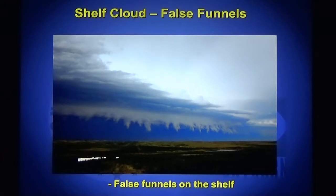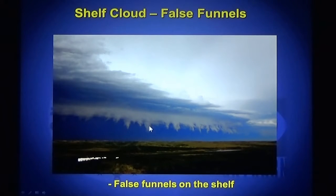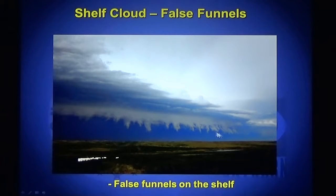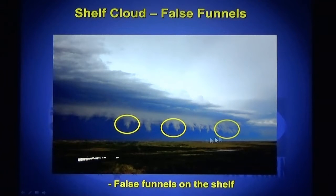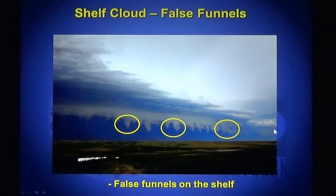Here's a picture of a shelf cloud with some false funnels — these are fingers of clouds sticking down. People often mistake these for funnel clouds or tornadoes, but they are not spinning. The finger is not spinning, so it is not a funnel cloud and it is not a tornado. Again, these features are often seen on a shelf cloud.